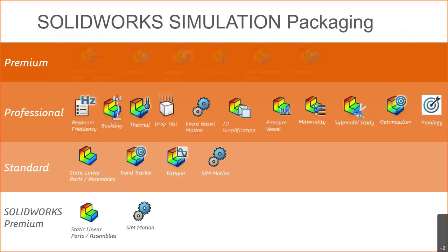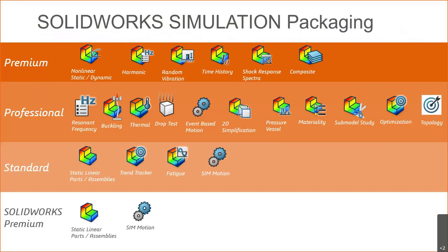At the core of SOLIDWORKS Simulation is SOLIDWORKS Premium — the highest level — which gives you static linear analysis on parts and assemblies. Even without a separate simulation package, if you have SOLIDWORKS Premium you get full meshing, full connectors, and the ability to leverage finite element analysis. There are three levels that can be added to any SOLIDWORKS seat: Simulation Standard, Professional, and Premium, each providing additional failure modes and including everything below it. Today we'll spend the bulk of our time at the Professional level, covering resonant frequency, thermal analysis, optimization, and topology.